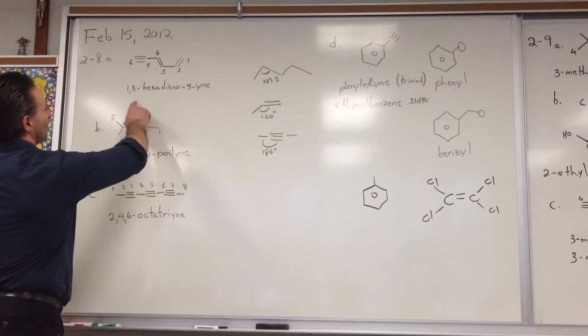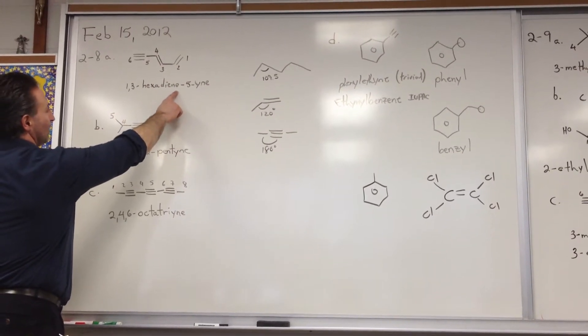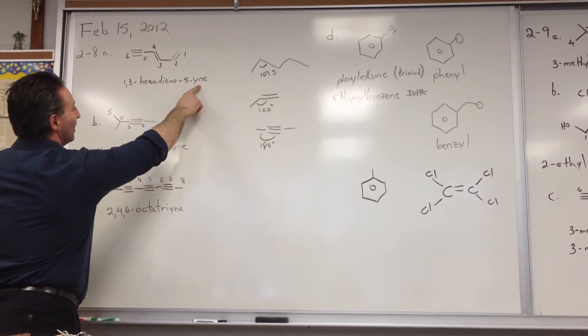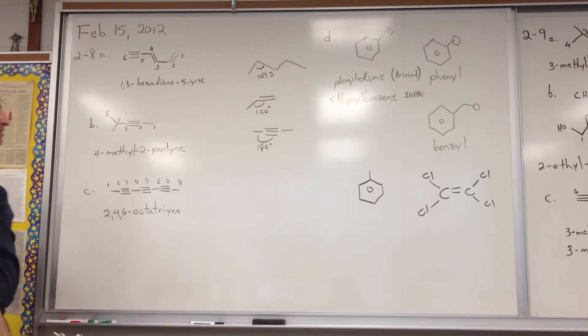There are two alkenes in this molecule, so it's a hexadiene, substituted at the first and third position, and then you put 5-ine to show the presence of an alkyne.